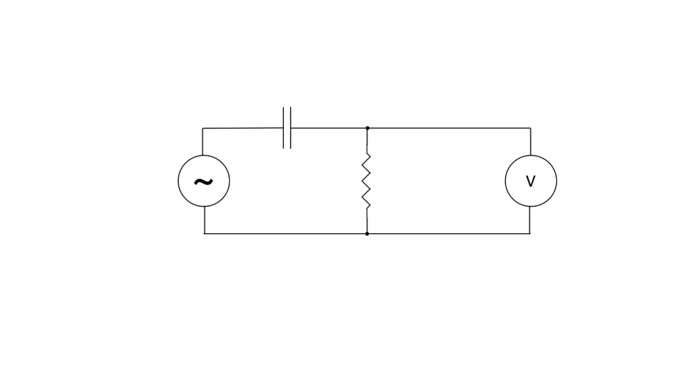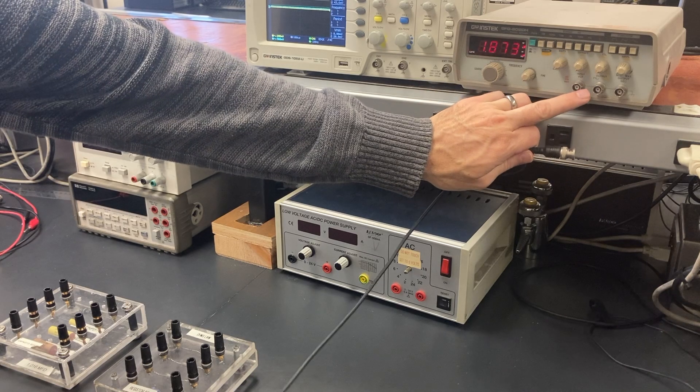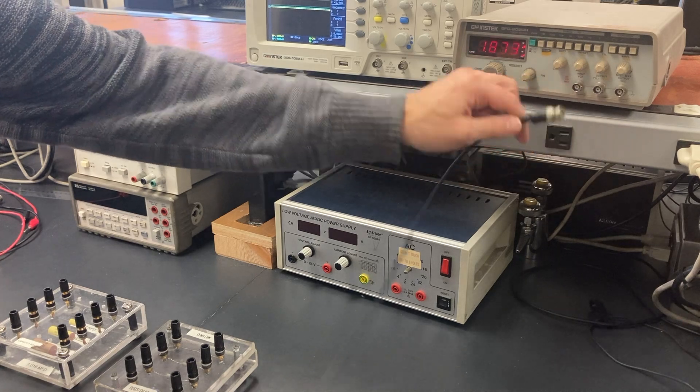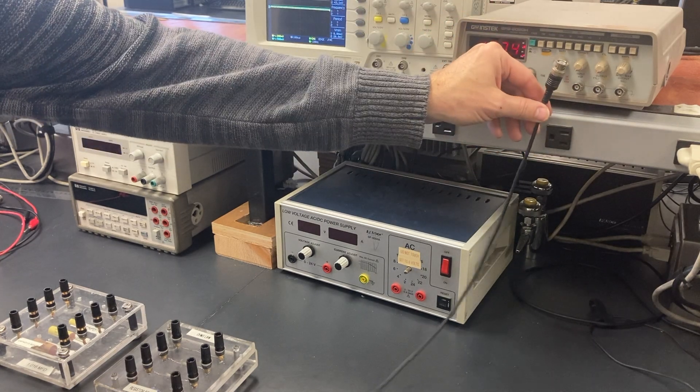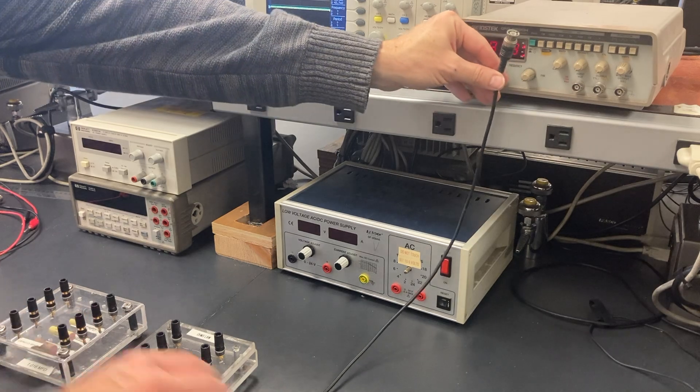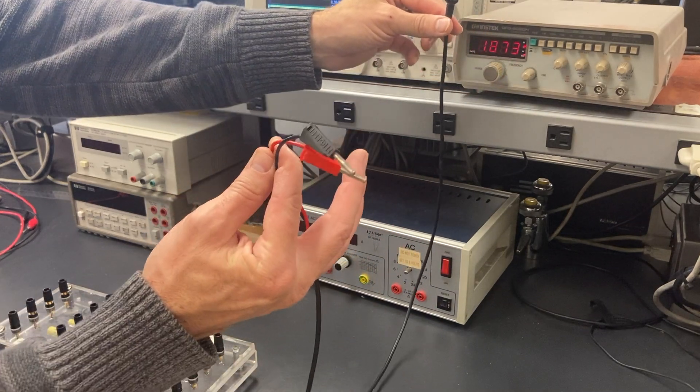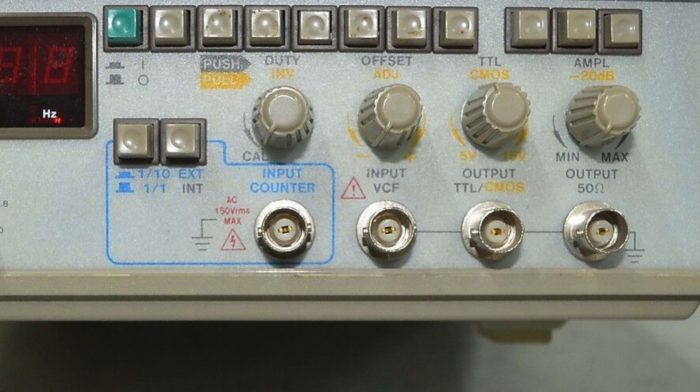Starting at the left where we've got our function generator, we know that's an instrument with a BNC terminal, so we're going to start with a BNC connector and we want to connect it to our circuit elements here, the capacitor and the resistor. So we're going to use a BNC to banana plug cable, and to get the signal from the function generator, we're going to plug our cable into the main output on the far right.